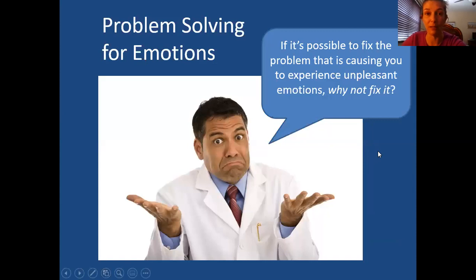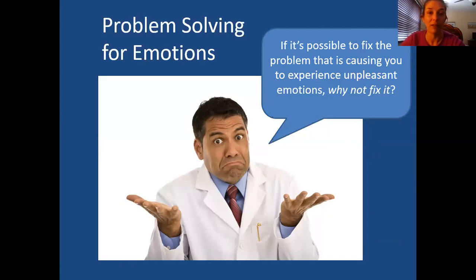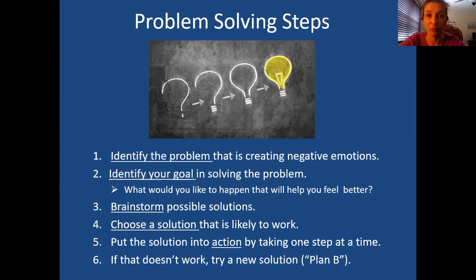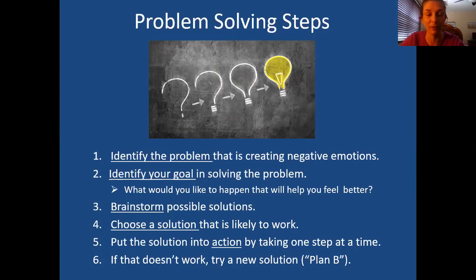Problem solving for emotions — the main idea here is: if it's possible to fix the problem that's causing you to experience unpleasant emotions, why not fix it? There's something we can do. The first video goes over problem solving steps: identify what the issue is that's triggering you to feel a certain way, identify your goal in solving the problem — what do you want to get out of the situation — brainstorm possible solutions, pick one and start trying it out. If that thing you tried didn't work, try something else. That's basically what it is.